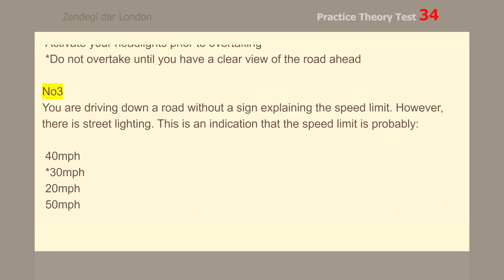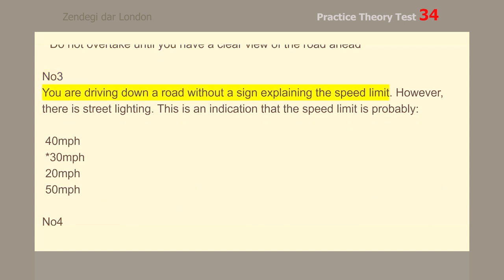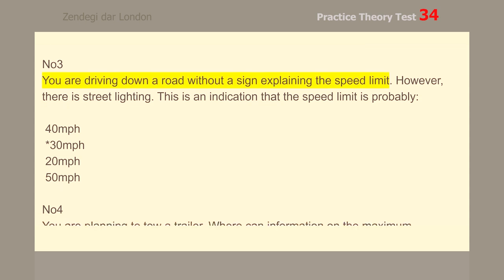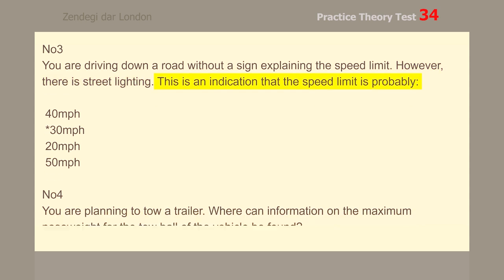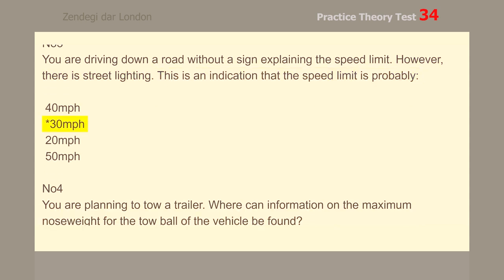Number 3. You are driving down a road without a sign explaining the speed limit. However, there is street lighting. This is an indication that the speed limit is probably 30 miles per hour.